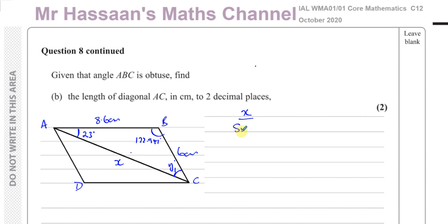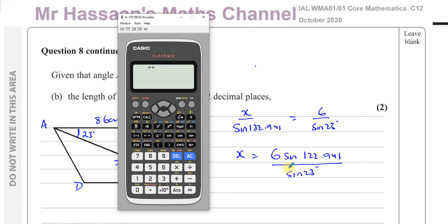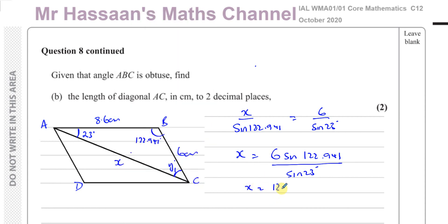We can say X divided by the sine of the angle opposite, 122.941, is equal to 6 over sine 23. 6 over sine 23 degrees. So X will be 6 times the sine of 122.941, divided by the sine of 23 degrees. And that will give us our length X. So we have 6 times the sine of 122.941, divided by the sine of 23. And that gives us 12.8870.